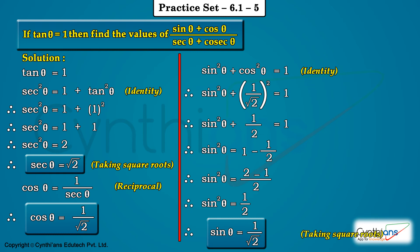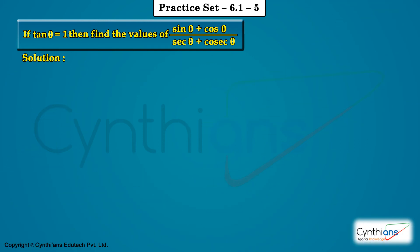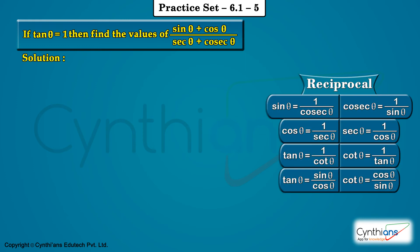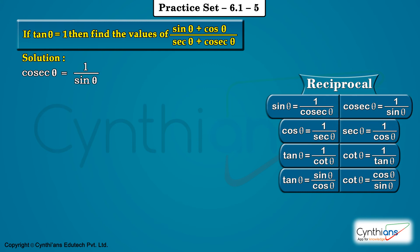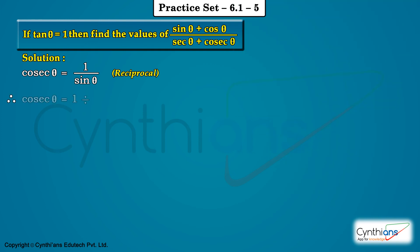We applied identity, and now the next step is reciprocal. We know the reciprocal of sine is cosec theta. So cosec theta is equal to 1 upon sin theta. Since sin theta is 1 upon root 2, the reciprocal becomes root 2 upon 1. Therefore cosec theta is equal to root 2. Box it.